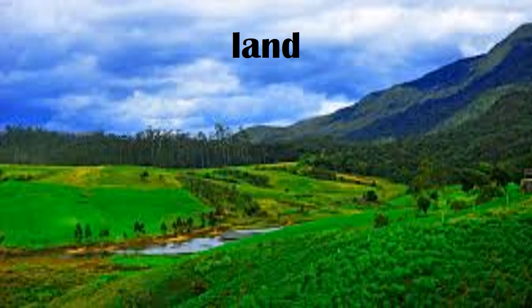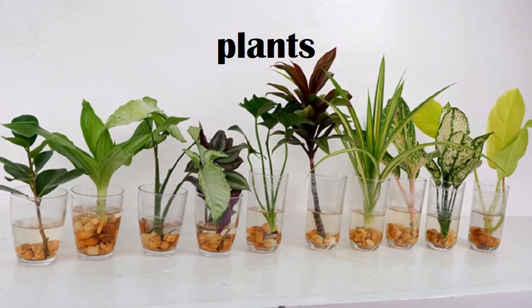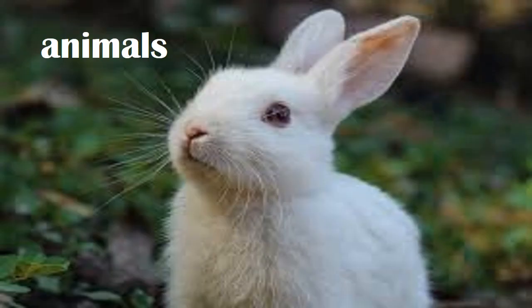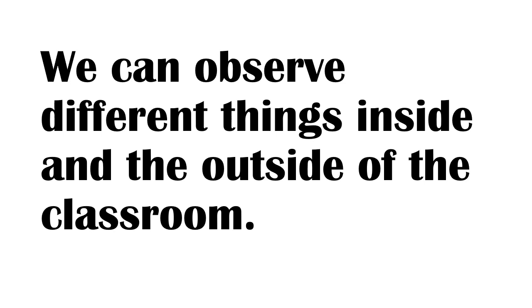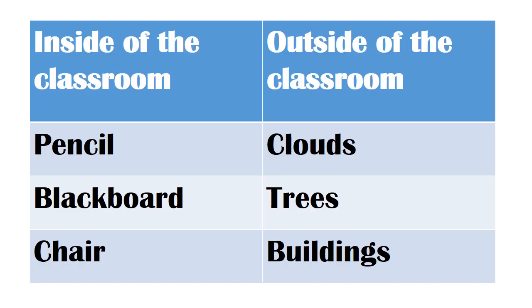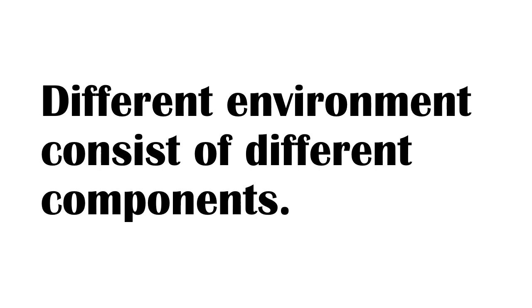The environment consists of different houses, different kinds of plants, and different kinds of animals. Let's do this activity to find out the components of the environment. You can observe different things inside and outside of the classroom. Things inside the classroom: pencil, blackboard, chair. Things outside the classroom: we can see clouds, trees, and many other different things.